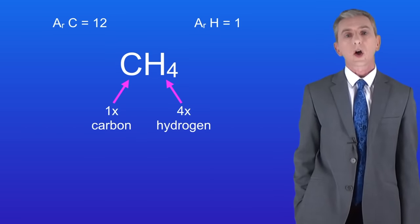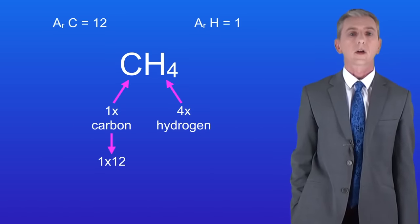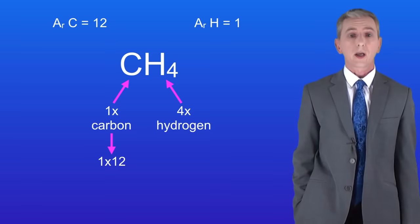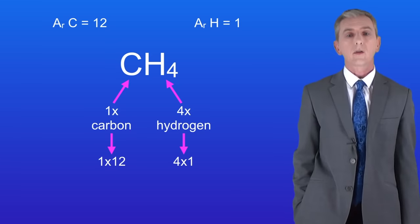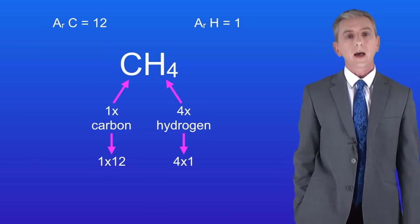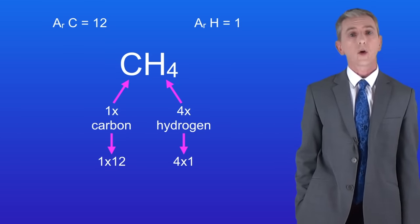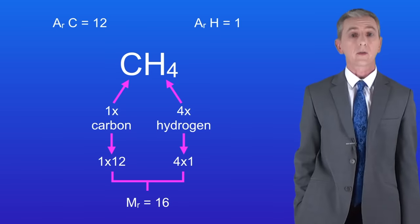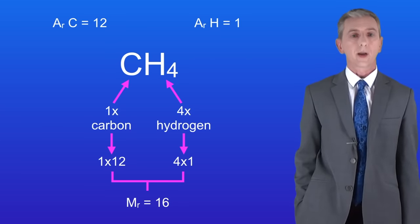Carbon has a relative atomic mass of 12 and hydrogen's got a relative atomic mass of 1. So because we've got one carbon atom we've got 1 × 12. Because we have four hydrogen atoms then we have 4 × 1. Adding all of these together gives us a relative formula mass for methane of 16, and remember that there are no units for relative formula mass.